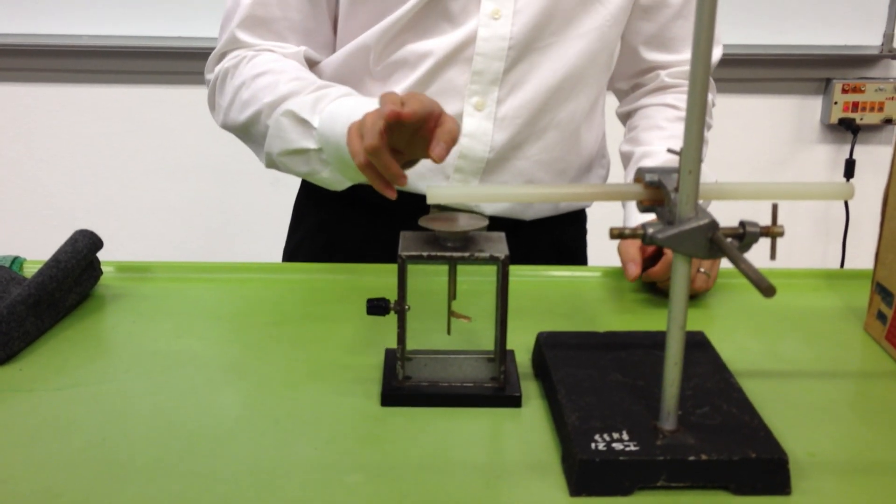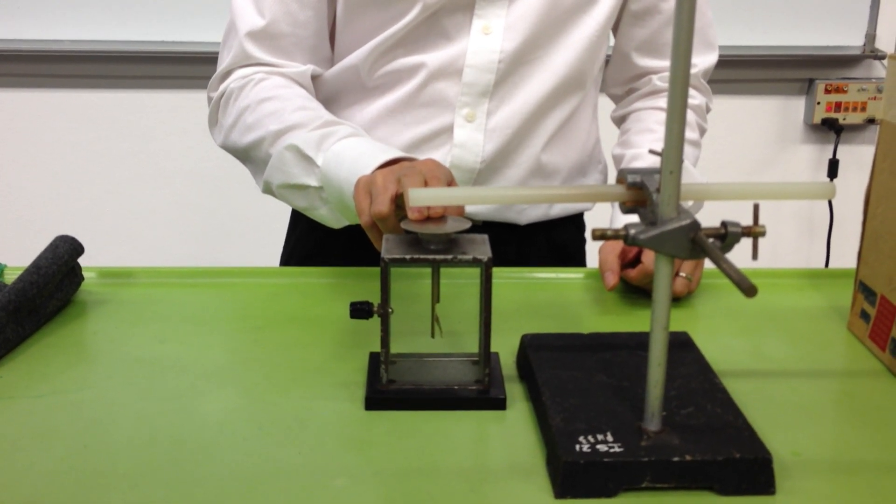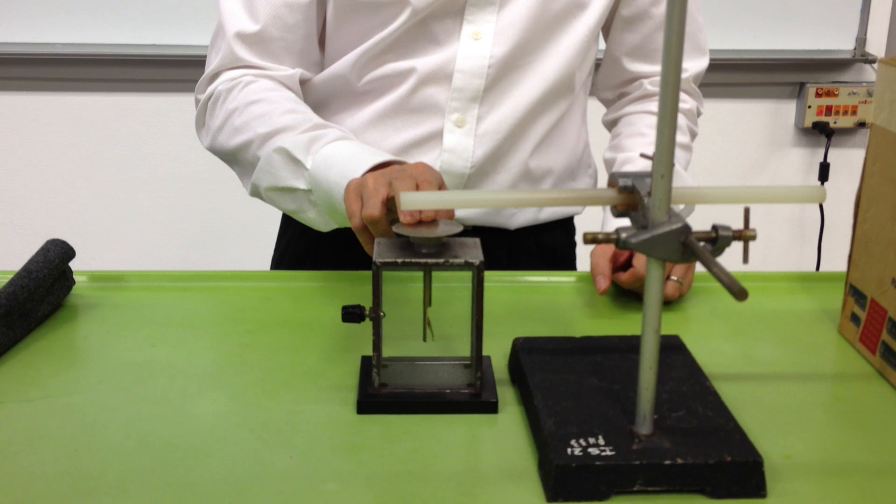Now, I'm going to touch the top blade of the gold leaf electroscope. You find that it discharges it. When I remove my hand, you can see there's some deflection.